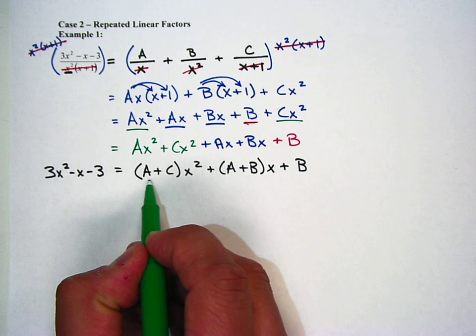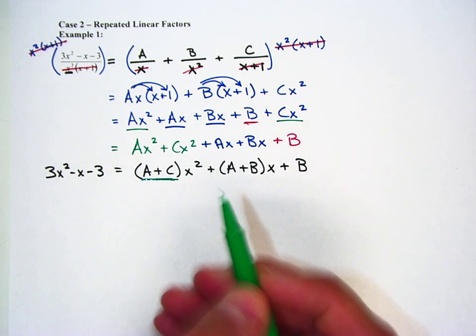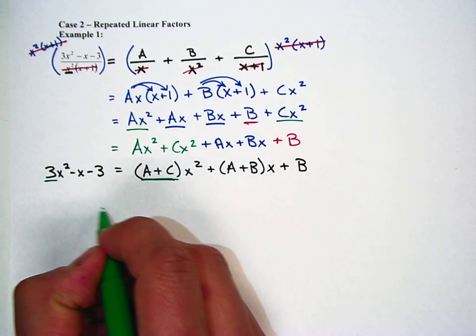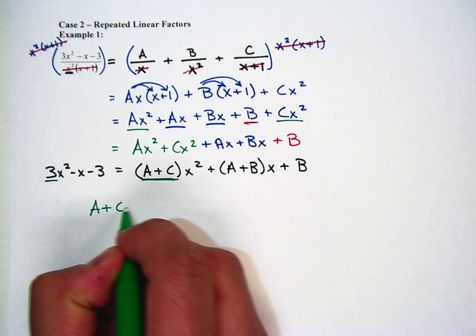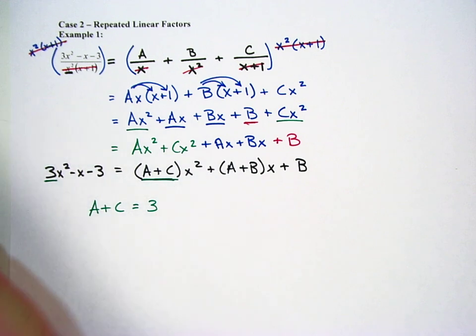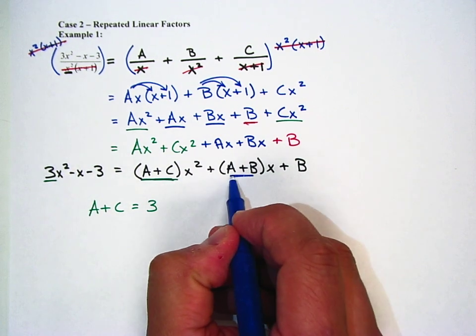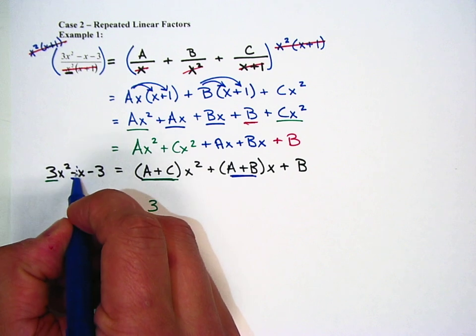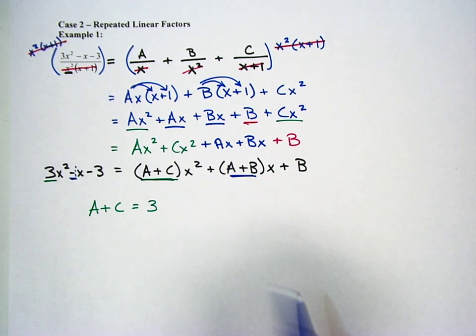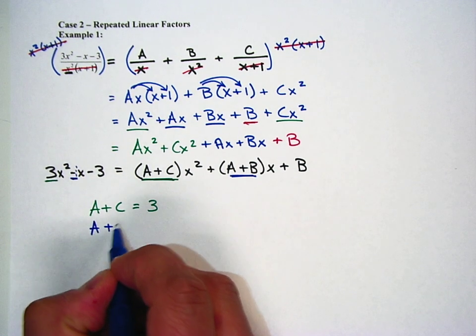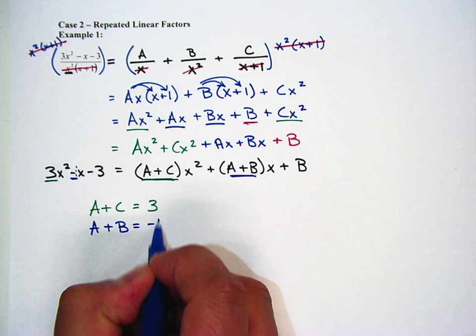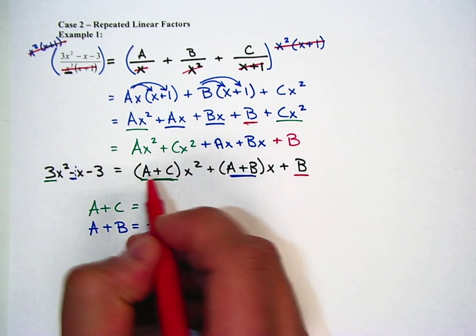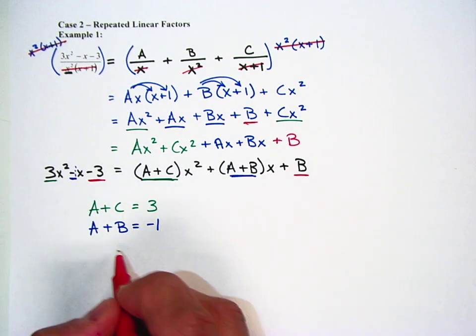These are my coefficients of the x squared term. That's my coefficient for the x squared term. So I have A plus C equals 3. A plus B is my coefficient for the x term. You can't really see it, but there's a negative 1 there. So we're going to say A plus B equals negative 1. And then finally, B is my constant. And my constant over here is negative 3.